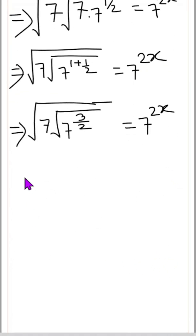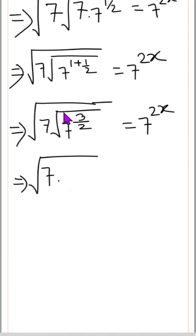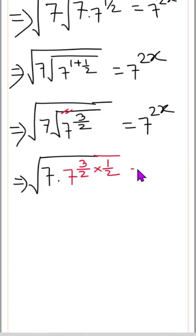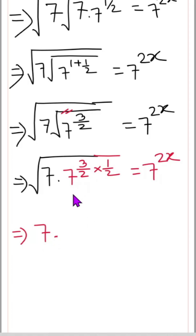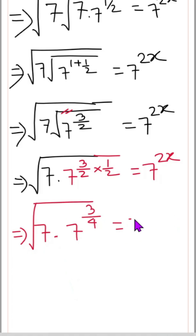Now for the same root 7, we will apply the next root and can write 7 to the power 3/2 times 1/2, which equals 7 to the power 2x. So 3/2 times 1/2 gives us 3/4, and here is another root, so we have 7 to the power 3/4 equals 7 to the power 2x.